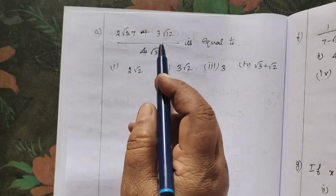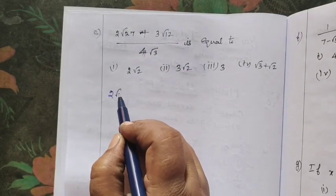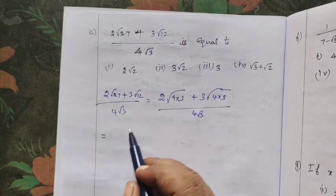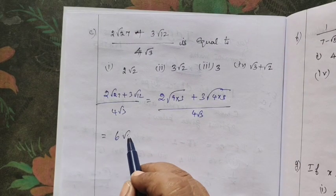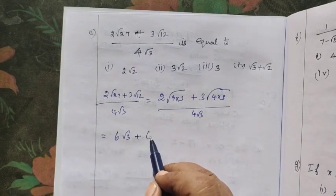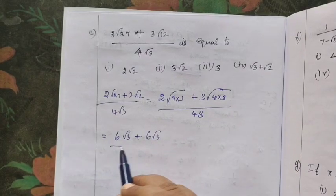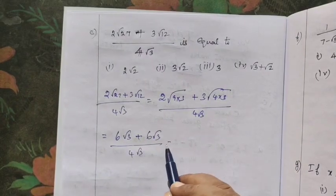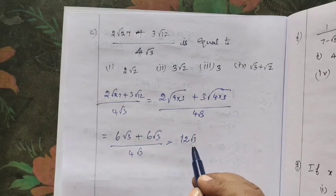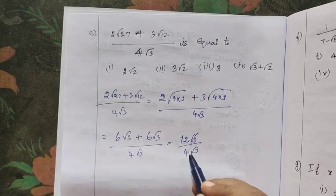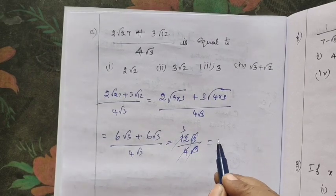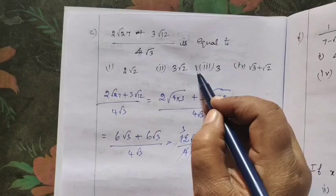Now simplify: 2 root 7 plus 3 root 12 divided by something. Take 3 outside — 3 times 2 equals 6, giving 6 root 3. Take 2 outside — again 6 root 3. These are like terms, so you can add them: 12 root 3 divided by 4 root 3. Root 3 cancels, and the answer for this question is 3.